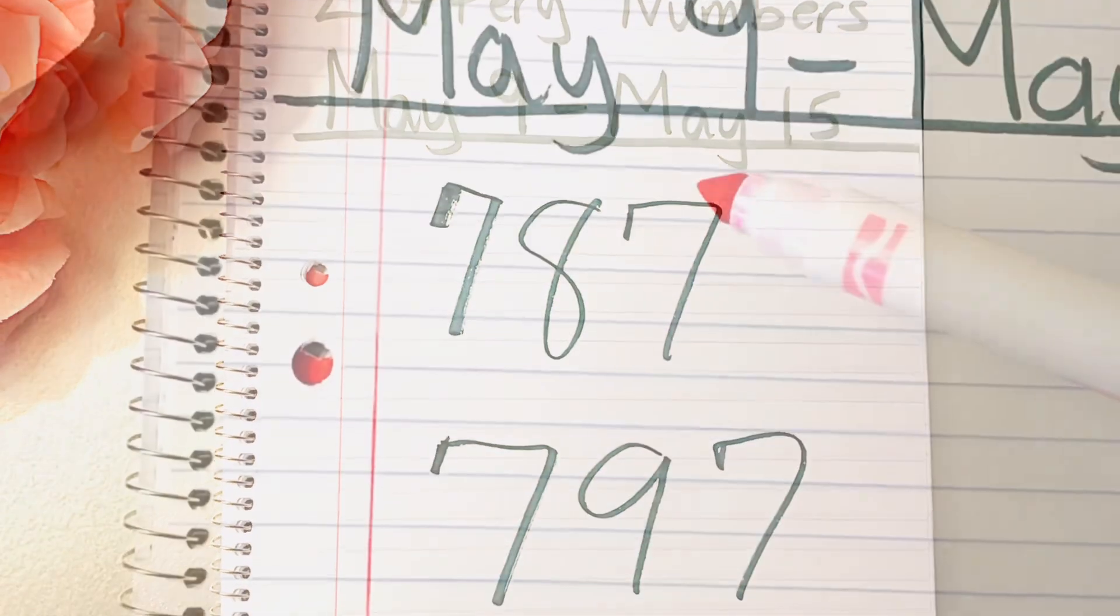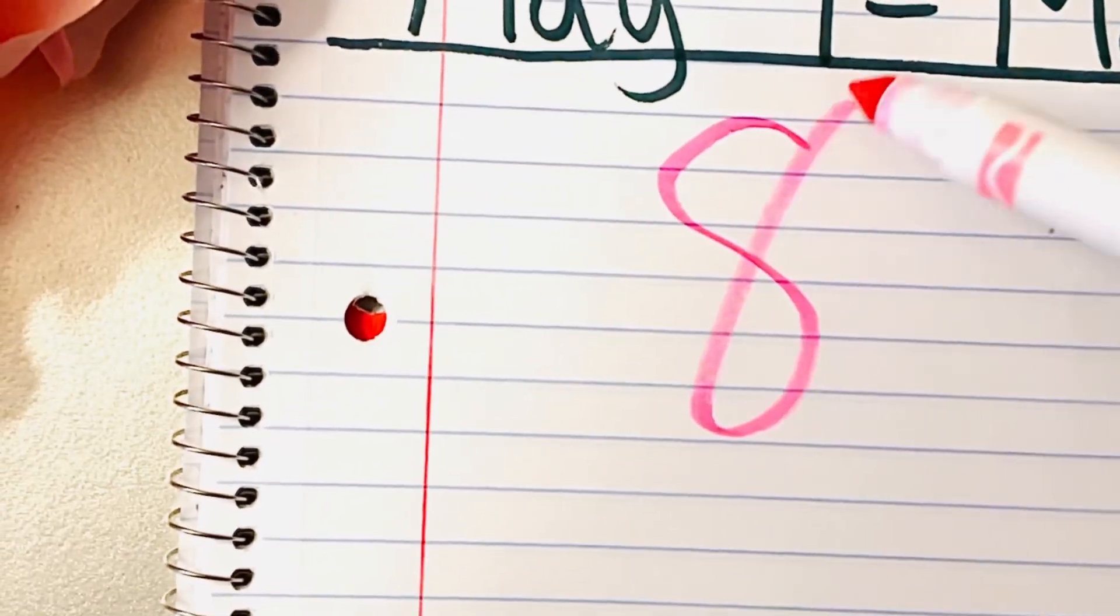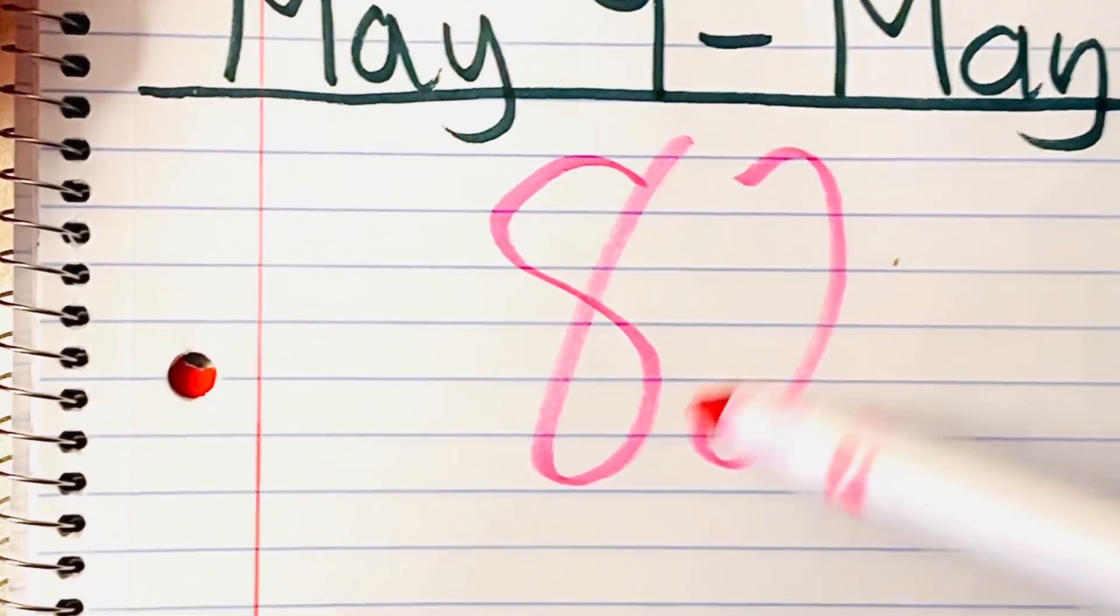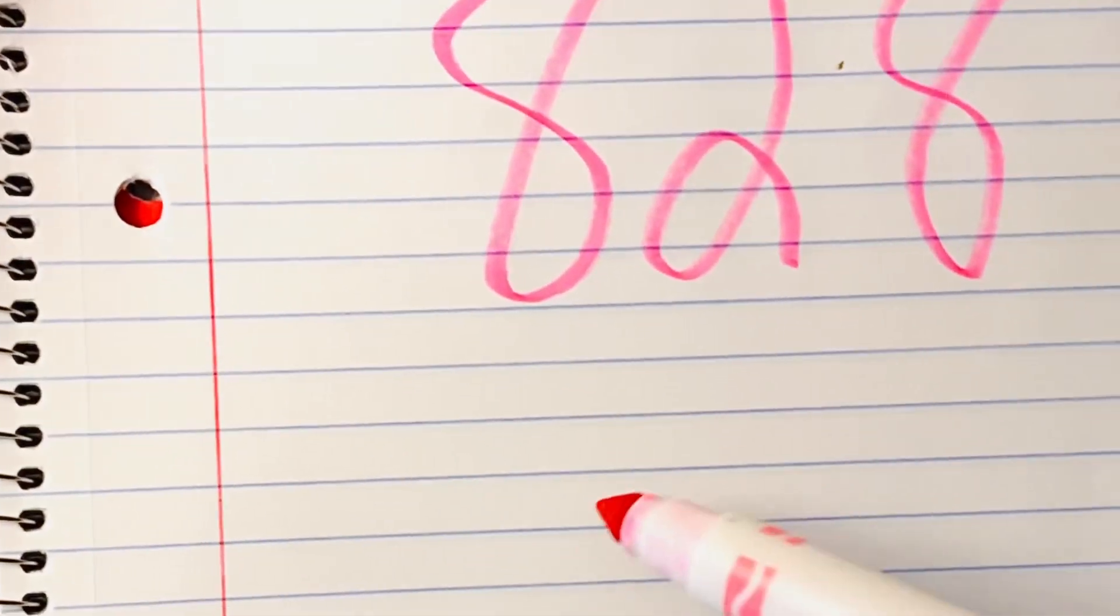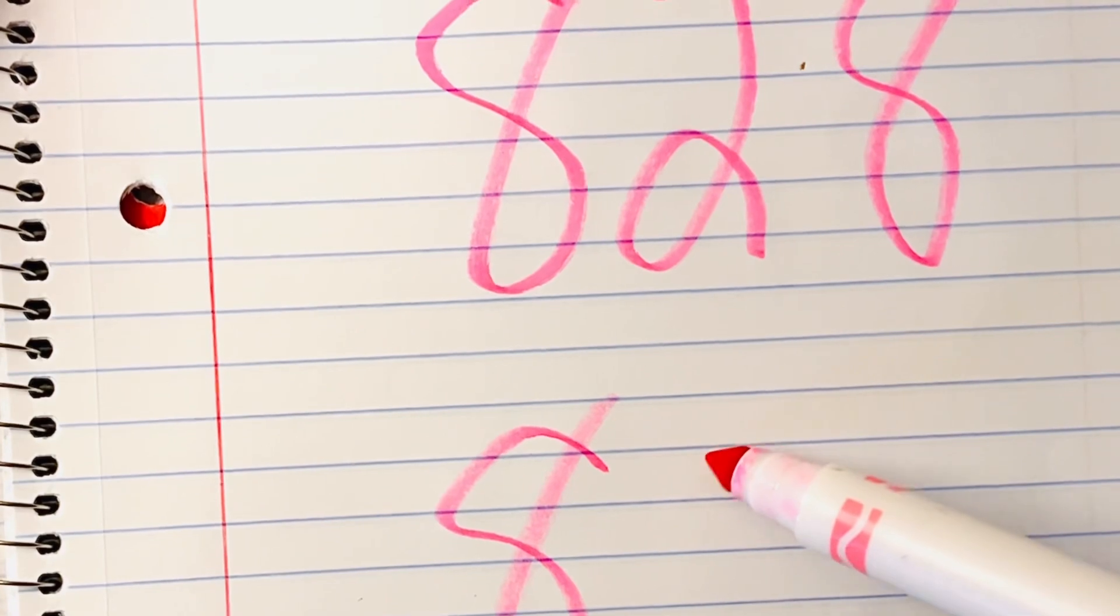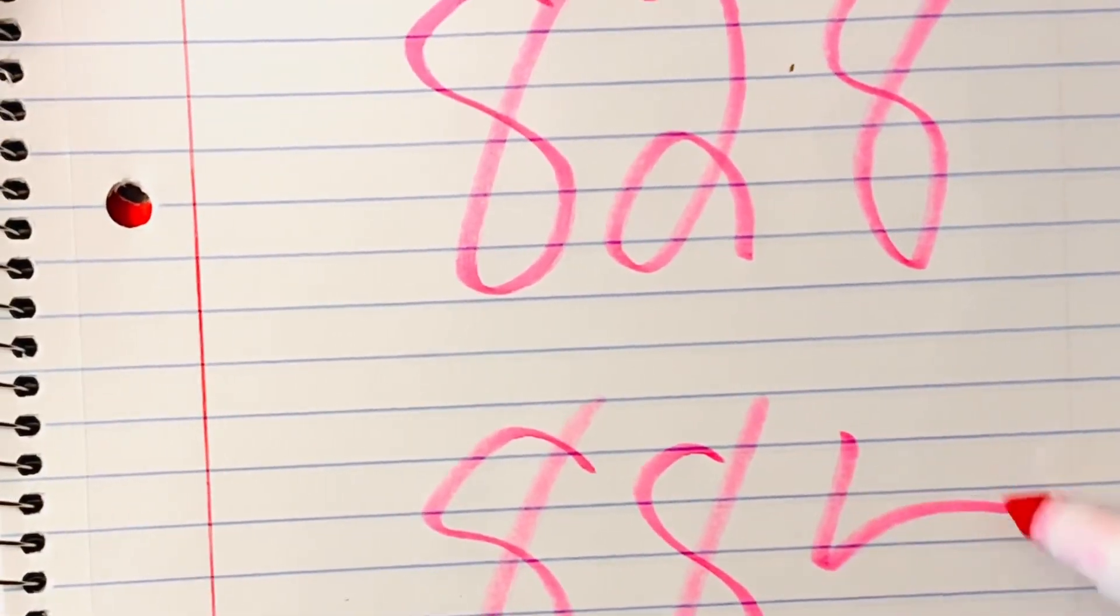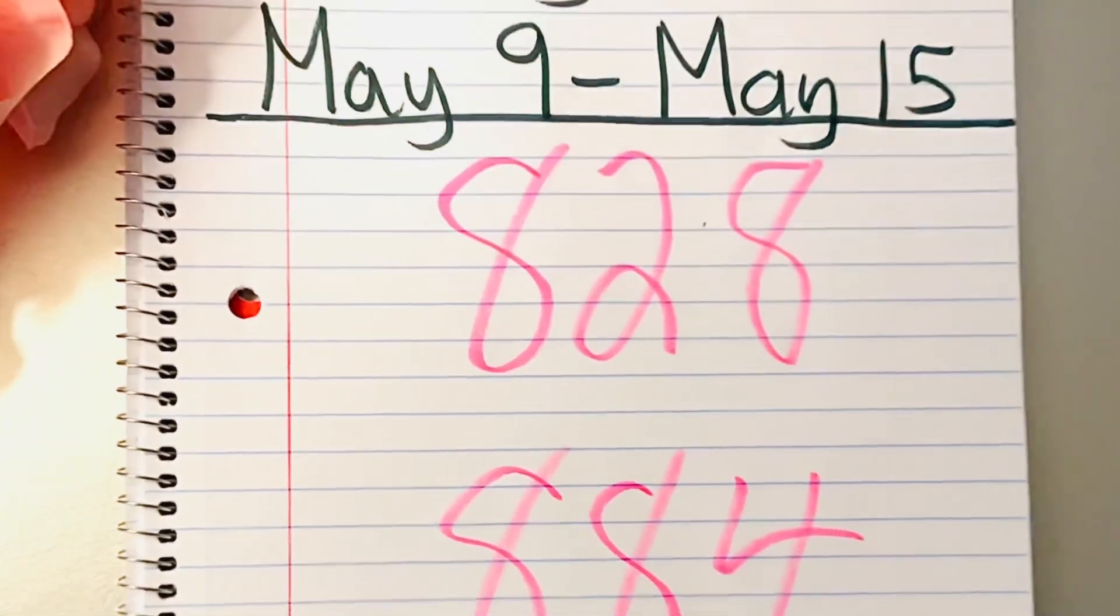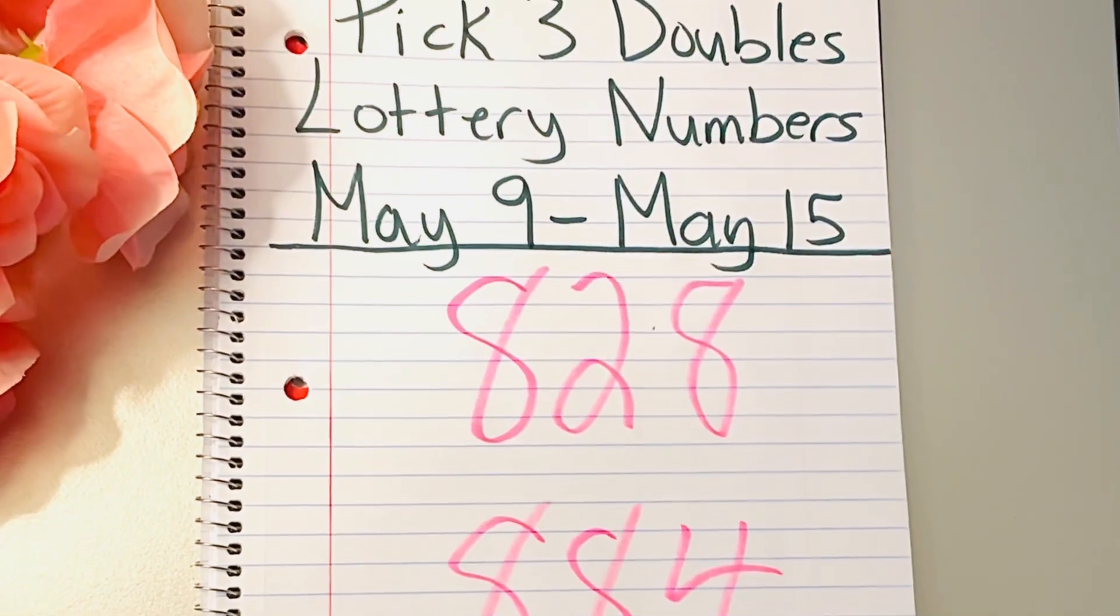828 is our next double number with the eights, and we have 884. Now these two numbers are pretty much separate. So it's basically you select one of these, which one that you like the best.